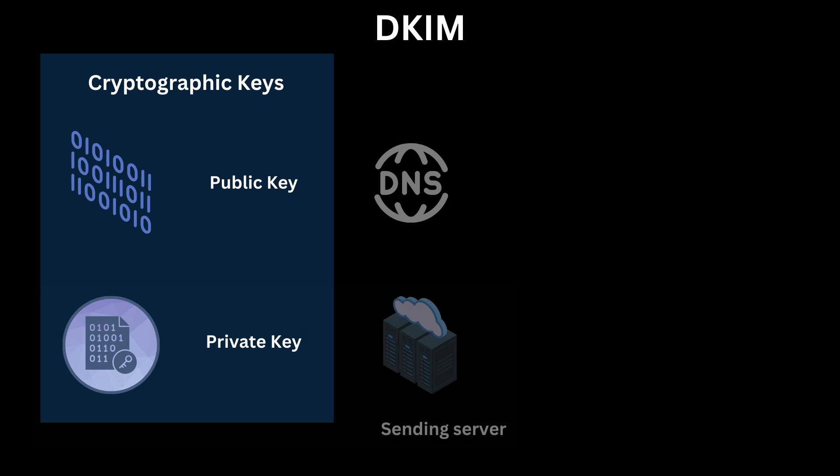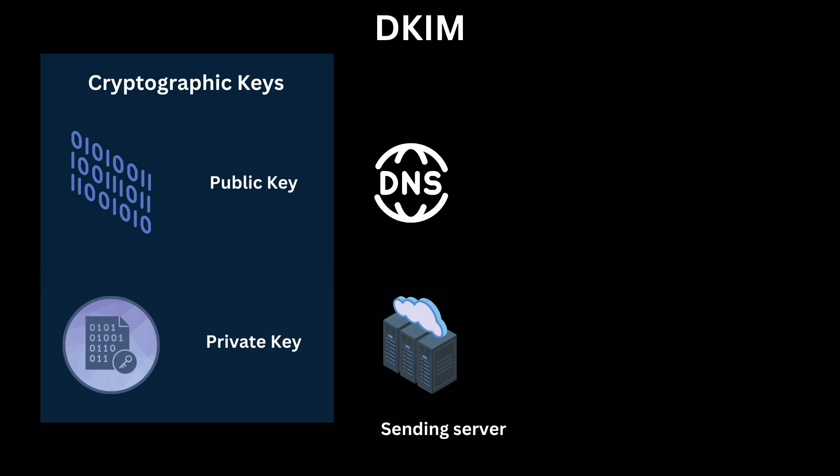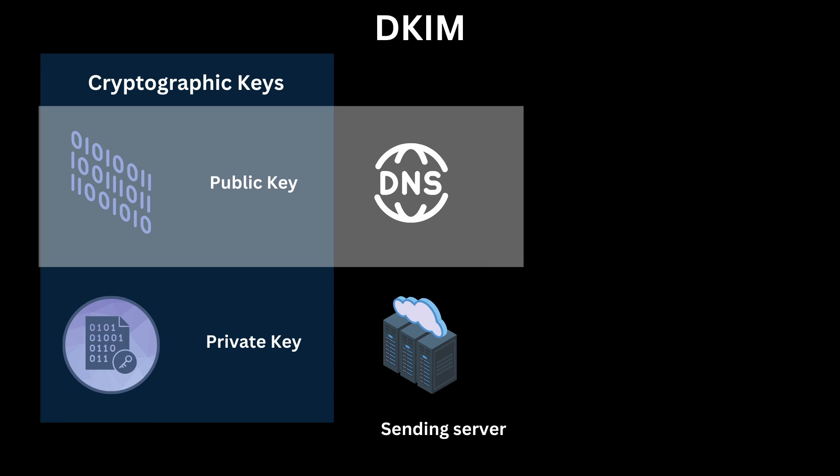When you set up DKIM for your domain, you generate a pair of cryptographic keys — one private and one public. The private key stays with your email server and is used to create the DKIM signature for each outgoing message. The public key is published in your DNS so everyone can see it.